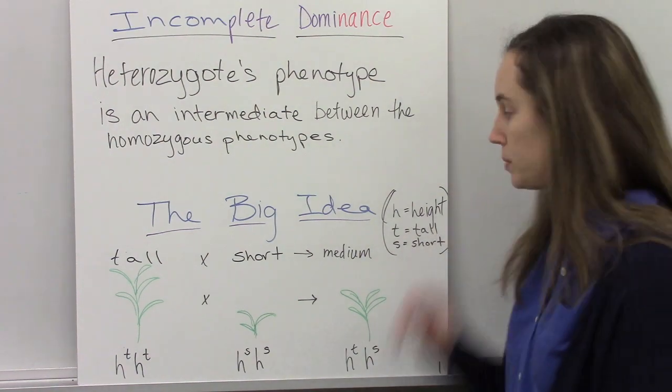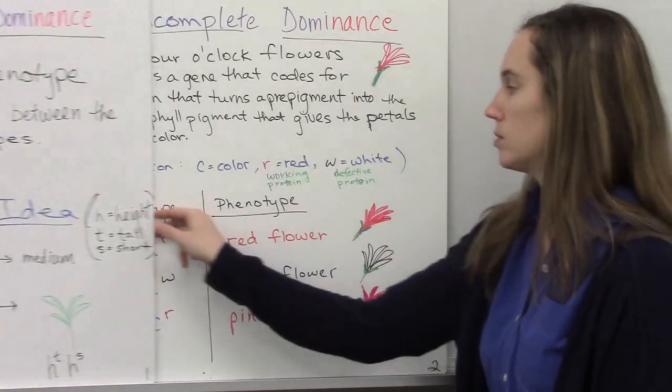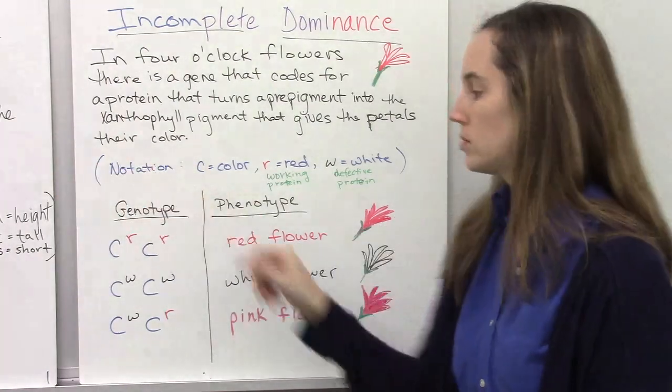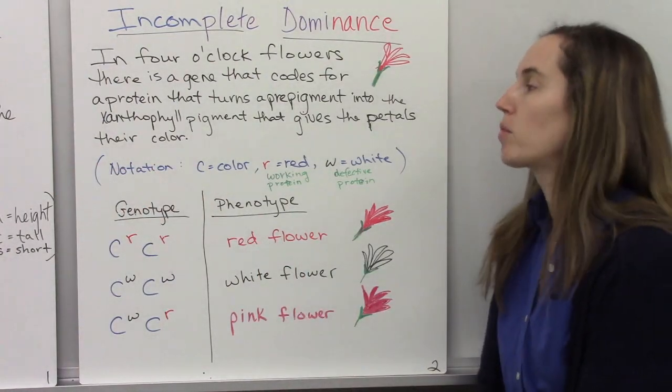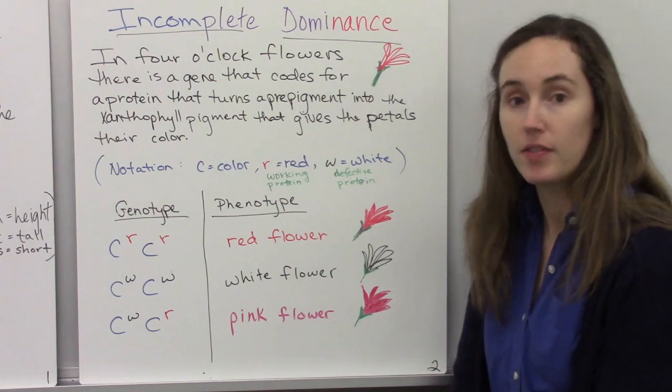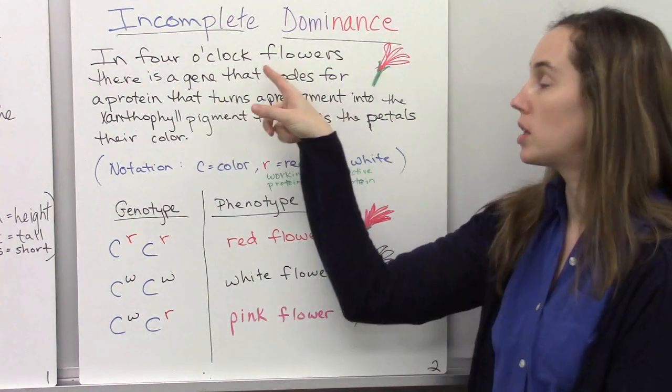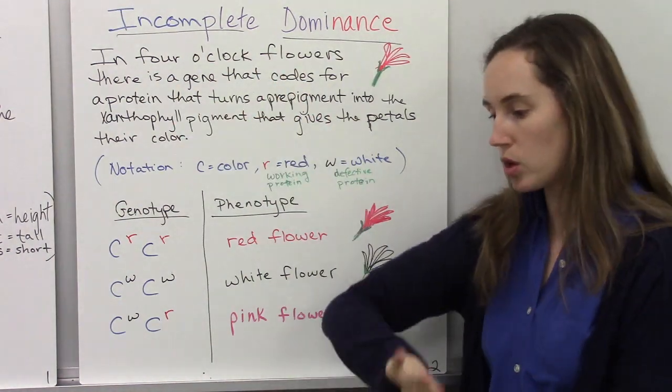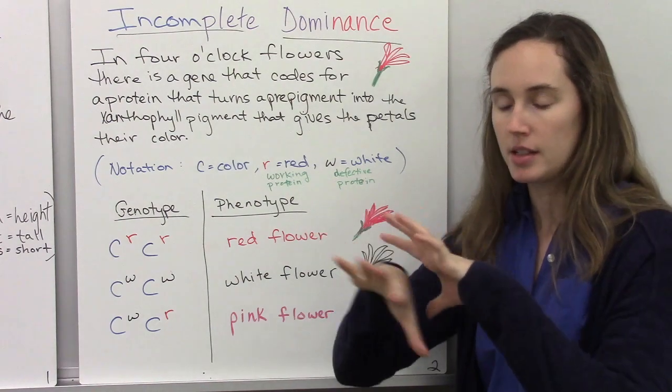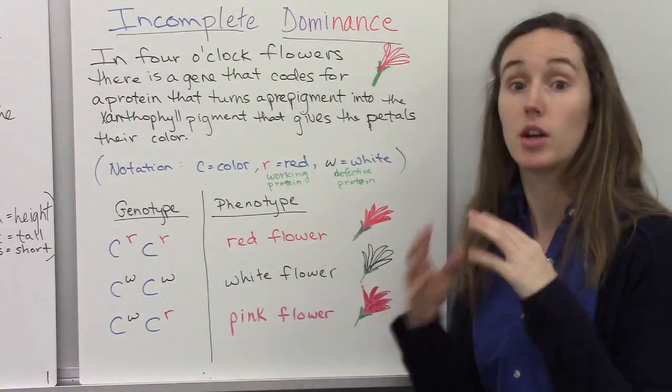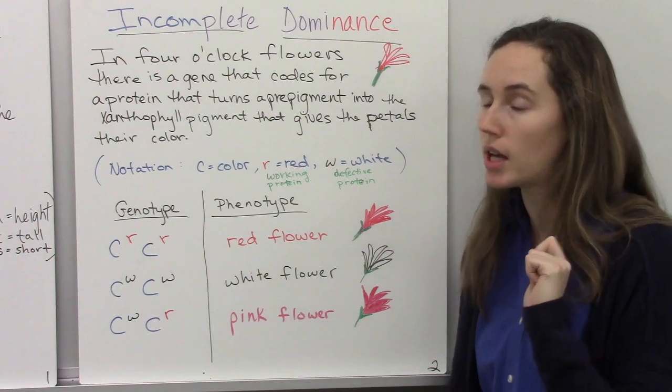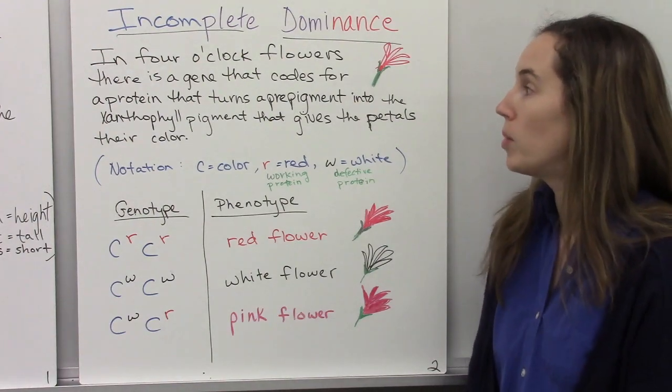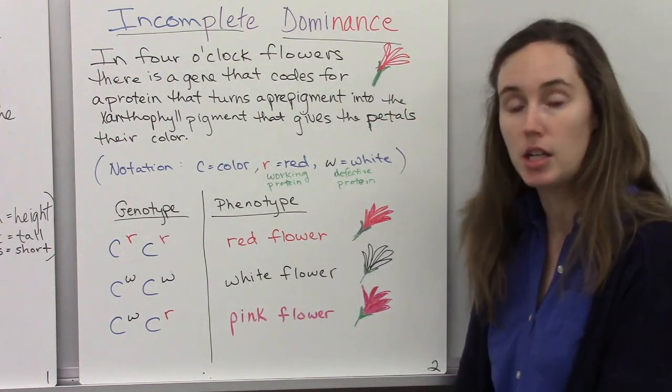So let's look at a real life example. There is a flower called a four o'clock, and they kind of grow like on this nice bushy plant, and they're really pretty and smell wonderful at night.